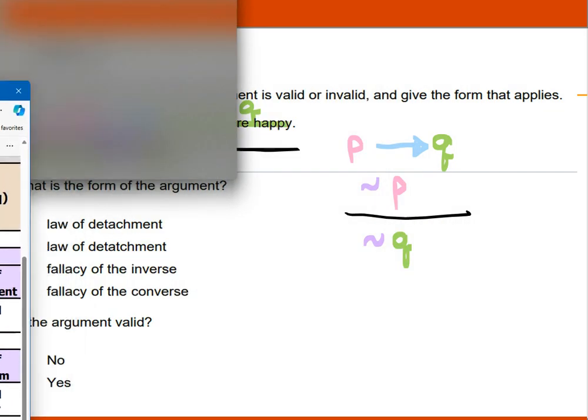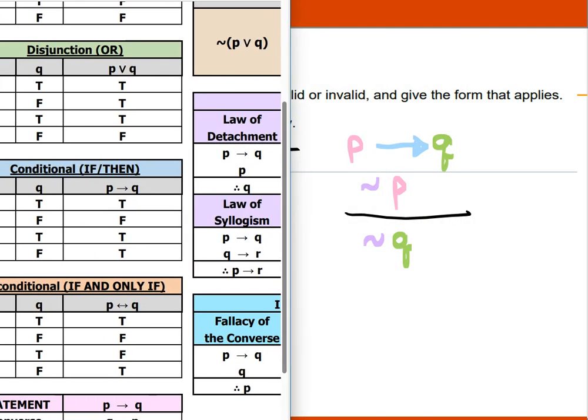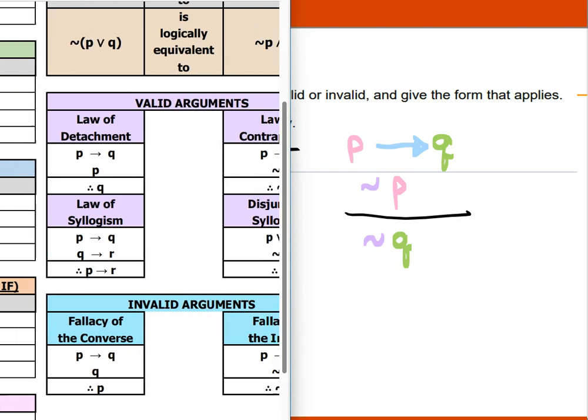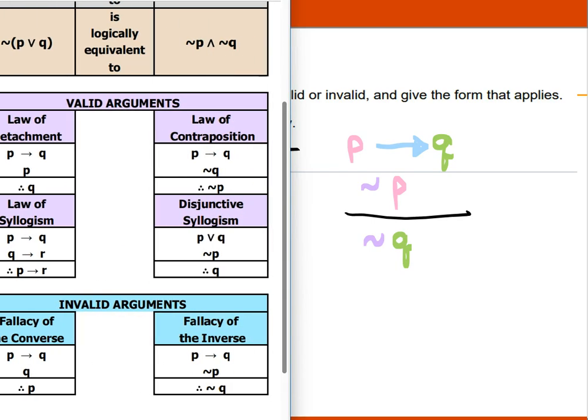And I'm going to try to match this with, which one is it? We're looking for if P then Q, negation of P, then negation of Q. It's down here, it's this one.